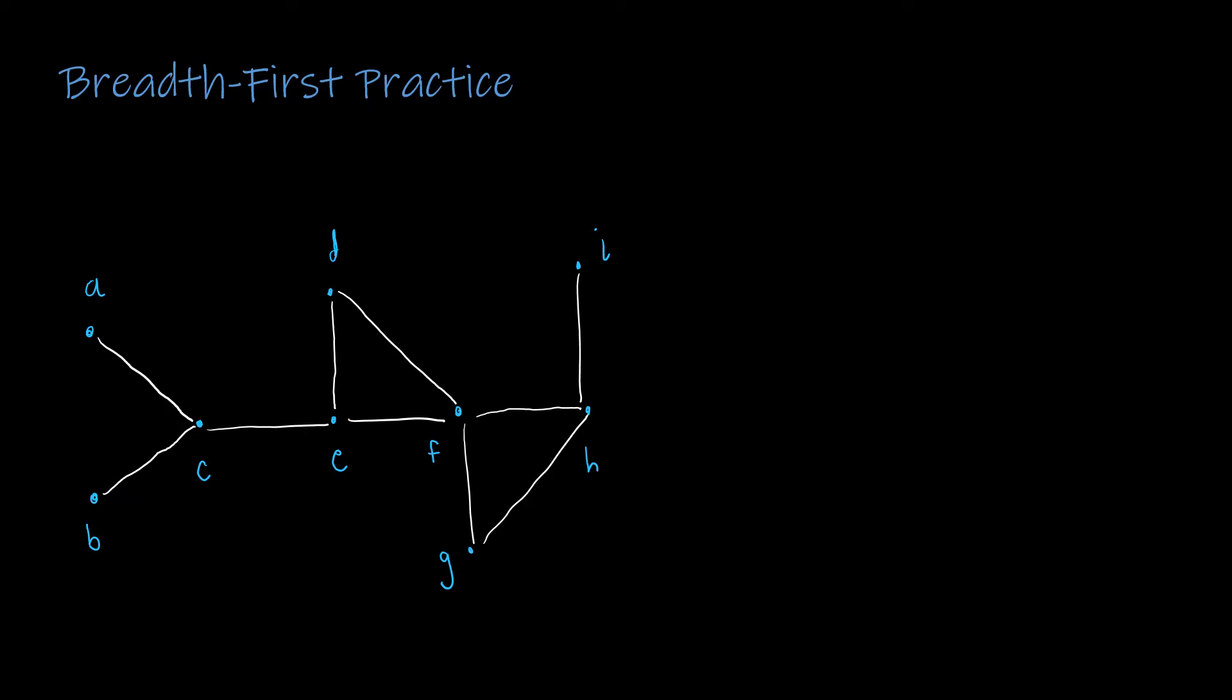So again, I will start with A. And where you start is sort of arbitrary, but we'll start with A. A connects only to one other vertex, which is C. So now I've visited both A and C.